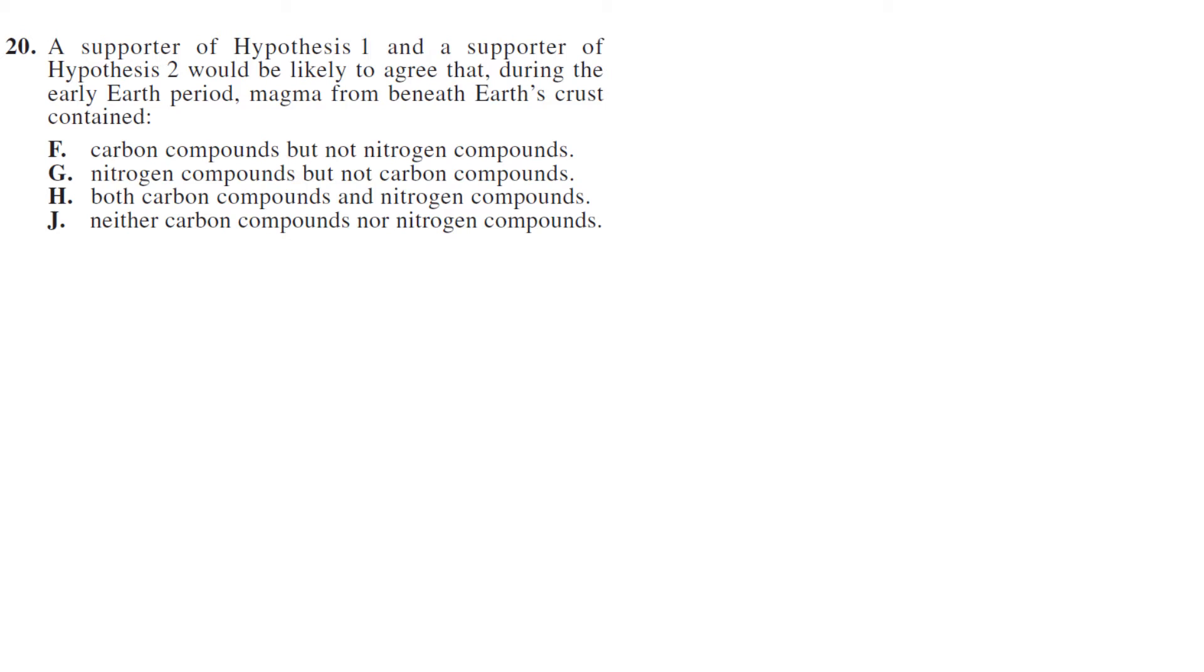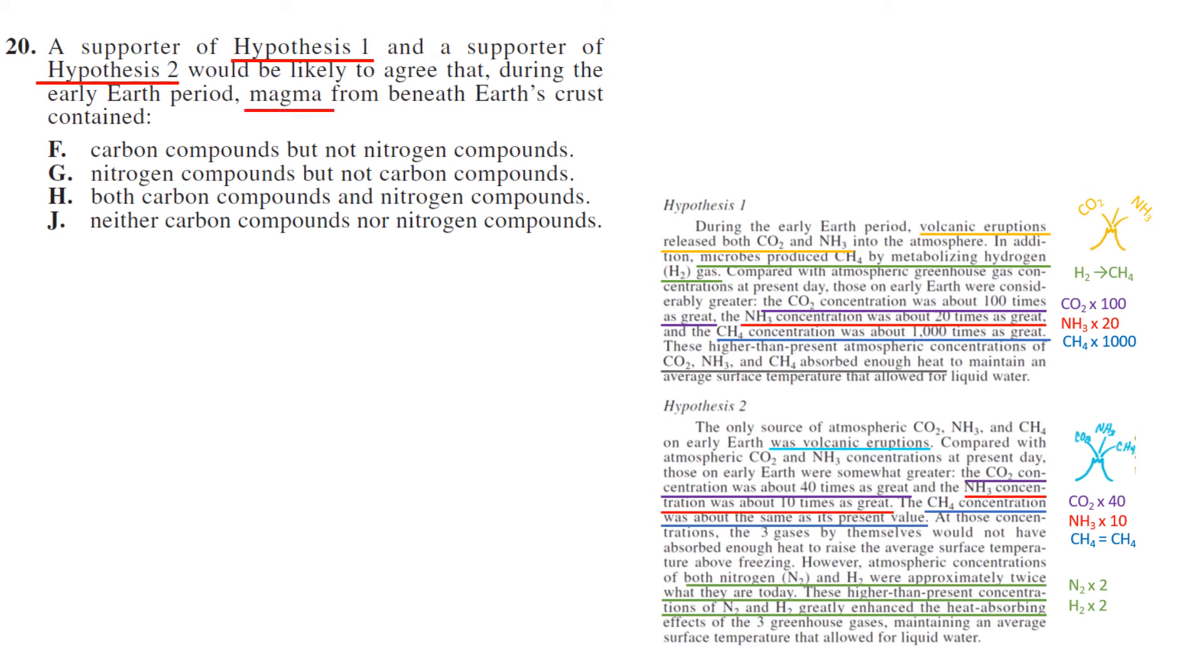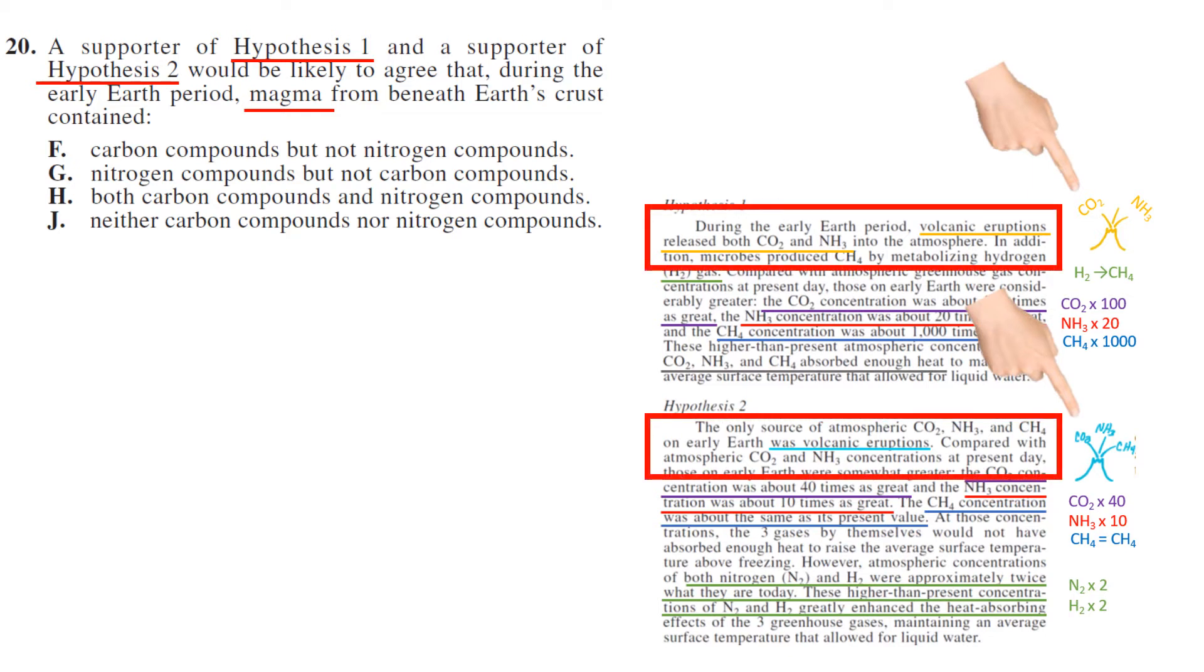In this one, a supporter of hypothesis one and two would agree that the early Earth period magma from beneath Earth's surface contains... So magma would be volcanoes and we see that in hypothesis one and hypothesis two. You can see in the reading if you want, it's going to contain both carbon and nitrogen compounds. So a little bit of knowledge there - you need to know that C and N are carbon and nitrogen. So carbon and nitrogen.